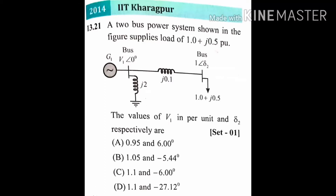This is the problem given in GATE 2014. A two-bus power system shown in the figure supplies a load of 1 plus j0.5 per unit. At the first bus the generator is connected and at the second bus the load is connected. The question asks for the values of V1 in per unit and delta2 respectively. We need to find V1, which is a magnitude, and delta2, which is an angle.